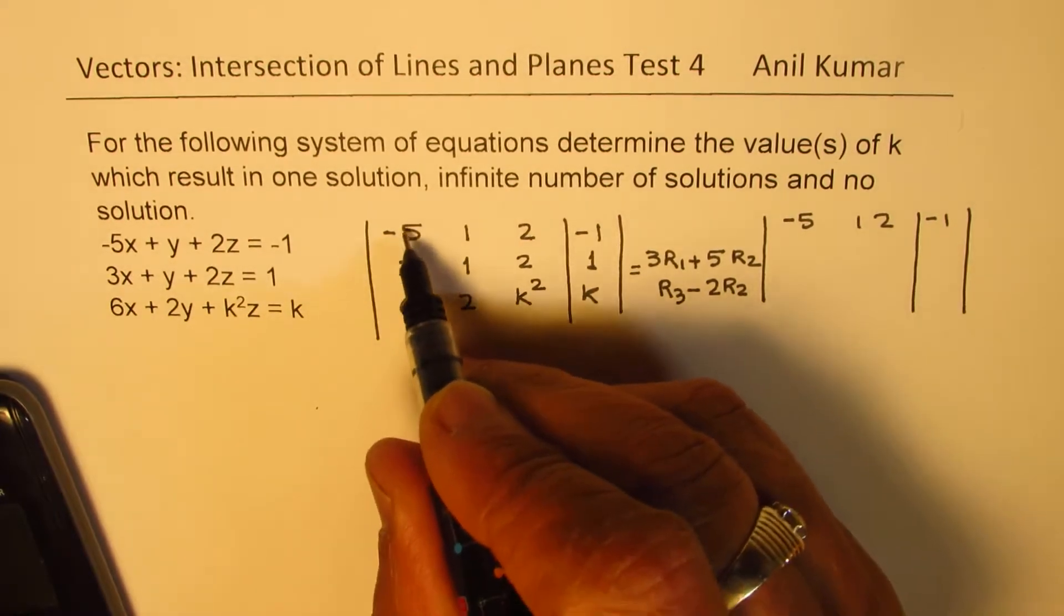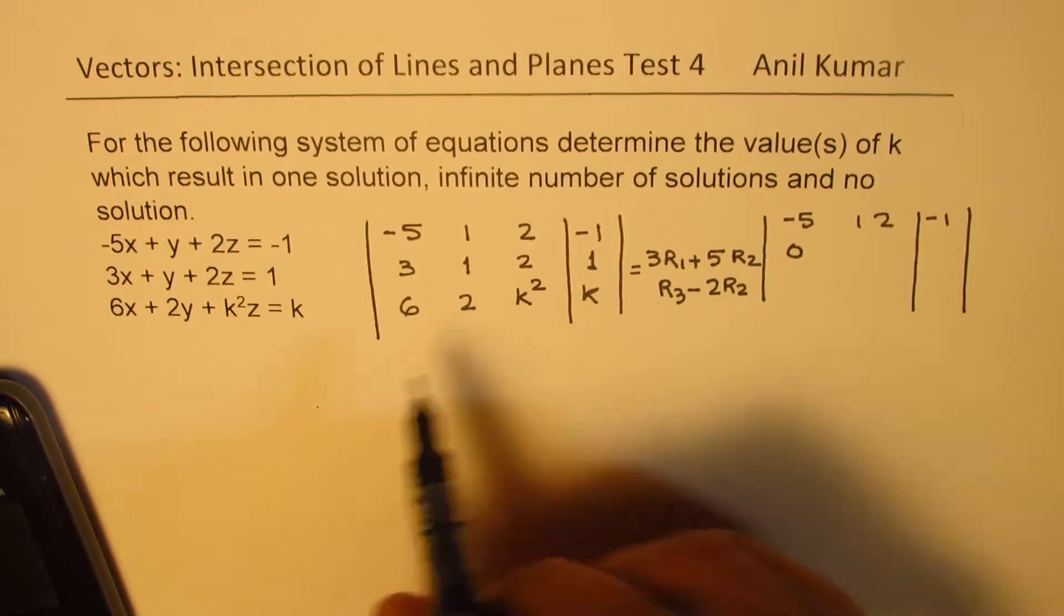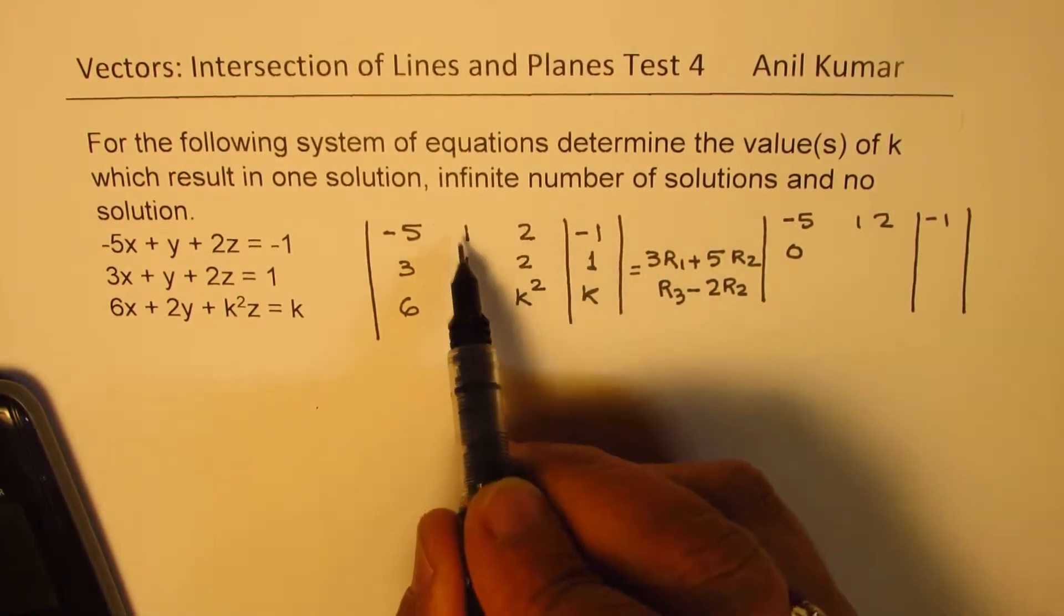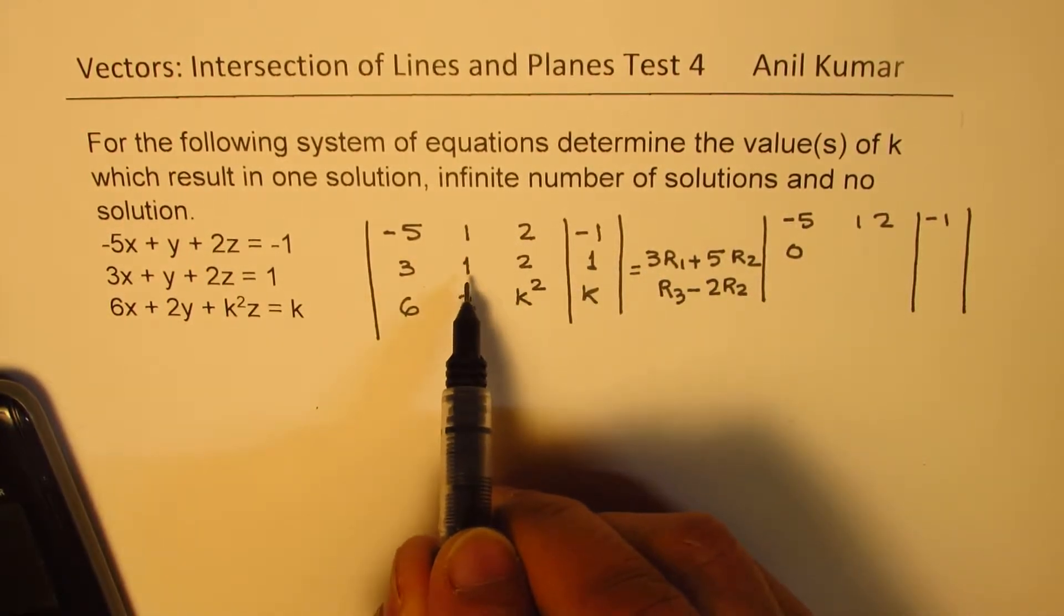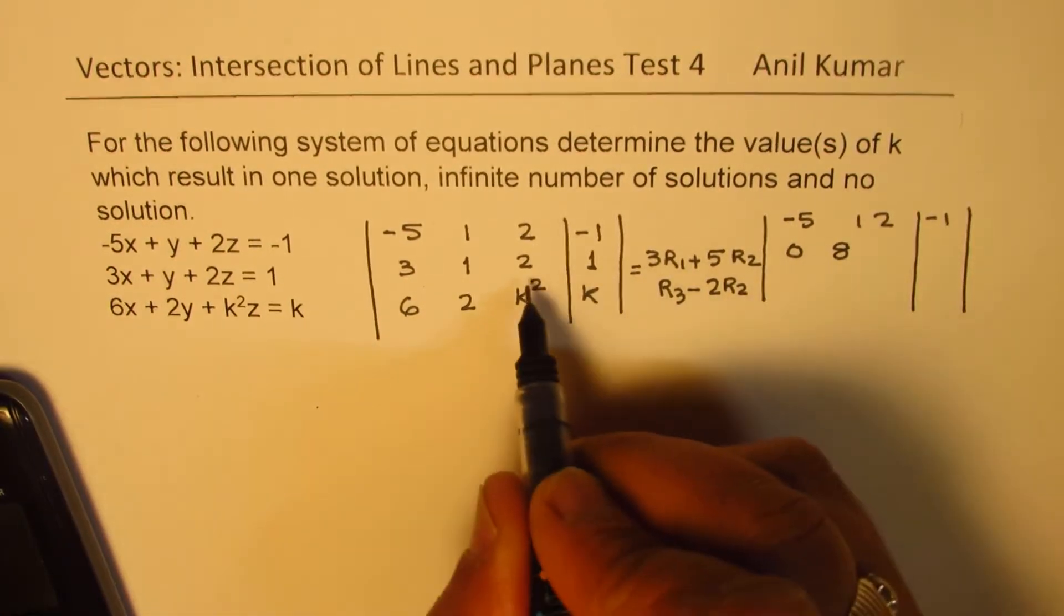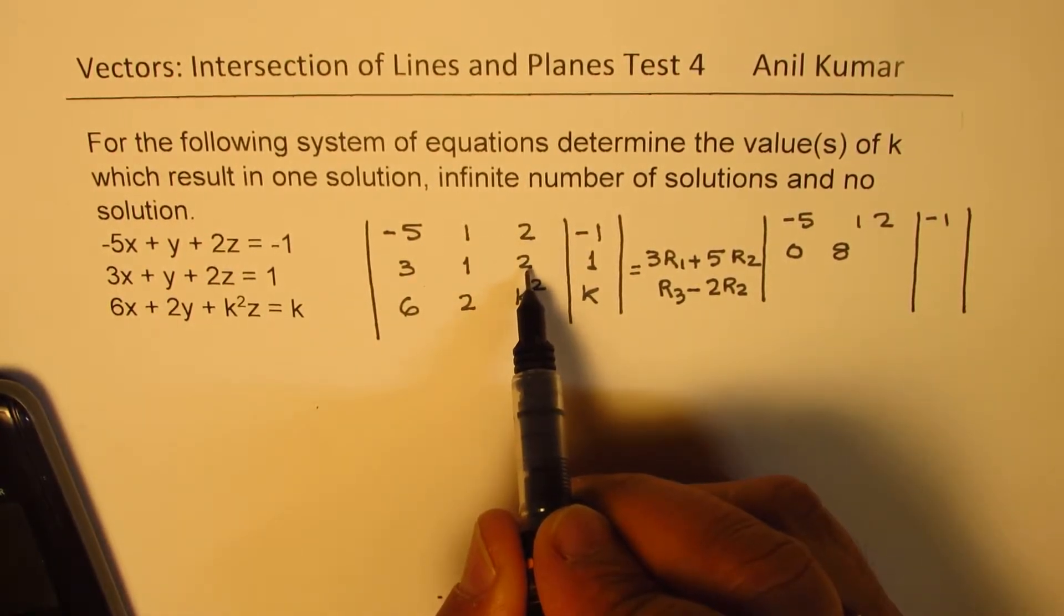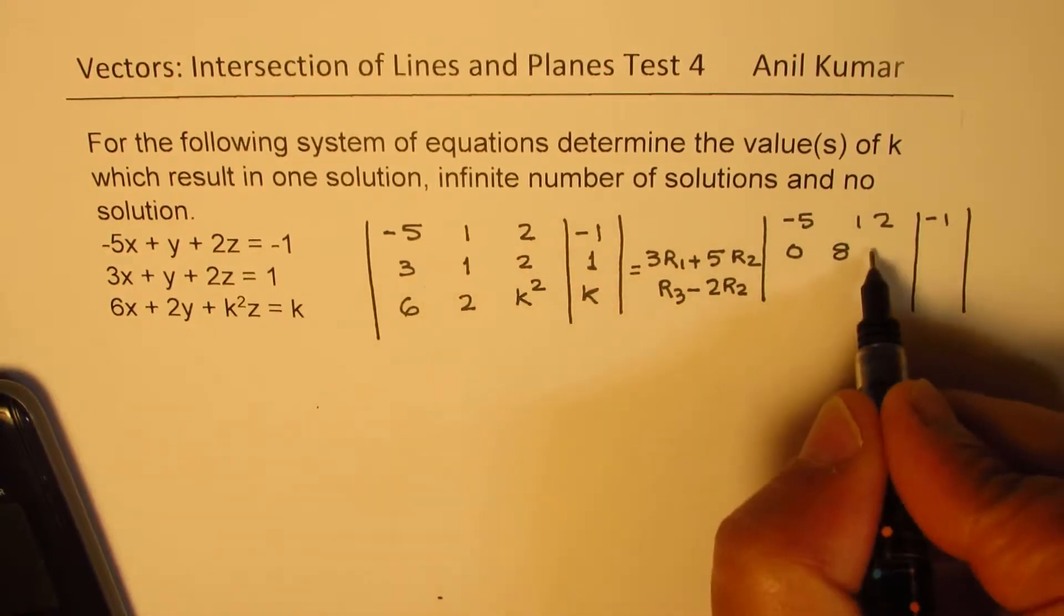When we multiply, we get 15, and this is also 15. By adding, we get 0 as expected. Now, if I do this 3 times, and this is 5 times, and add them up, in that case, I get 8 here, and here, 3 times 2 is 6, 5 times 2 is 10, and so we get 16 here.